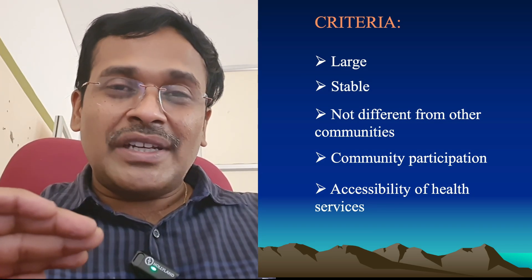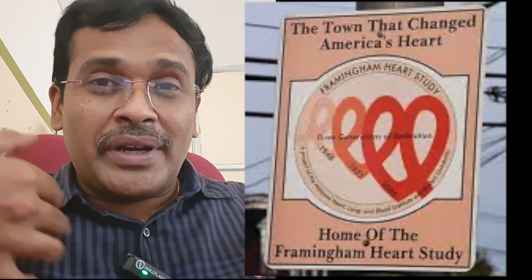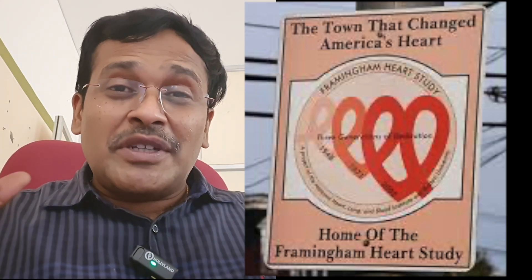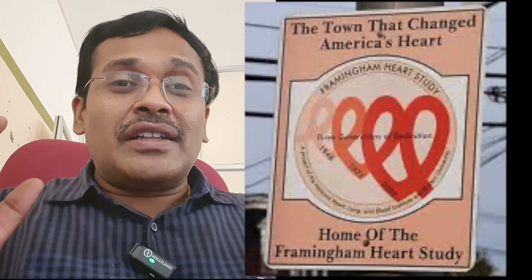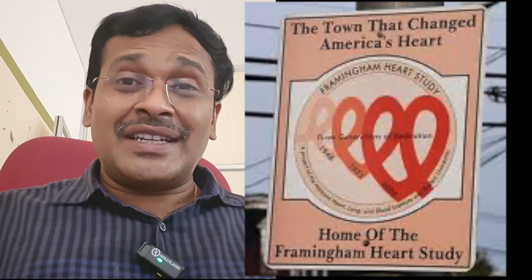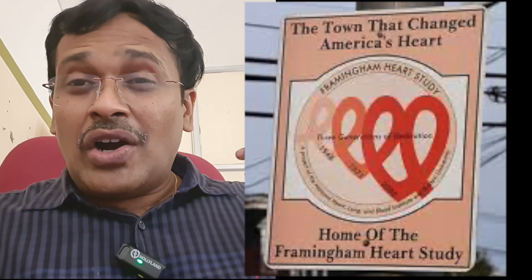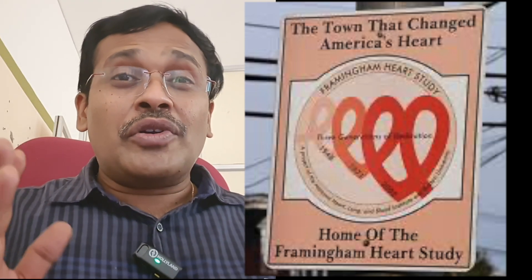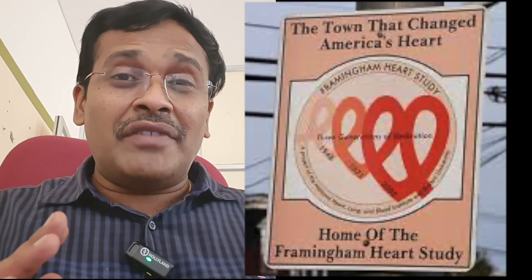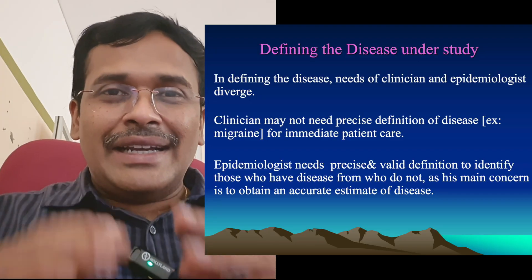One classic example is the Framingham Heart Study, where they were able to conduct a proper investigation of heart-related problems — why they are occurring — by choosing a specific denominator population. That is why today we know heart diseases and their risk factors like salt, cholesterol, stress, obesity, smoking, and alcohol. Everything we know is because this is one of the landmark studies — the Framingham Heart Study — where we have a very good, accurate description of the study population.